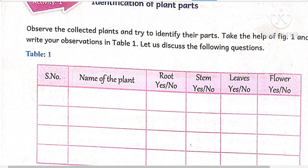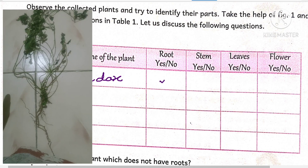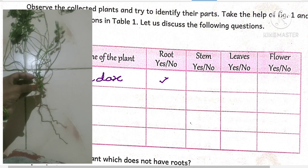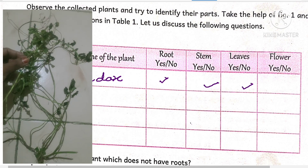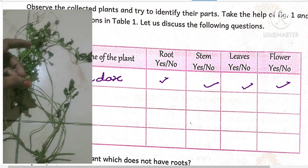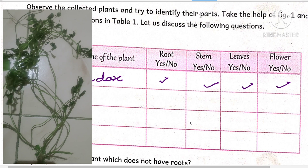Now I will show one video — observe it and write down the points. The first plant is a tridax plant, commonly known locally as 'gaddi chamanti.' Does it contain roots? Yes. Does it contain stem? Yes. Does it contain leaves? Yes. Does it contain flowers? Yes, it also contains flowers.